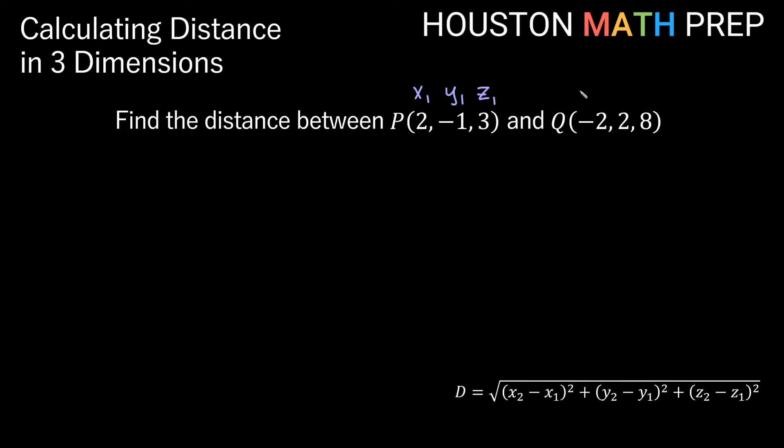And my point Q is my second point, so that makes this the second x coordinate, the second y coordinate, and the second z coordinate. So we've got x2, y2, z2 in Q. And so now we'll just figure out our distance. So our distance is going to equal the square root of x2 minus x1, so that's going to be -2 minus 2, all of that squared,